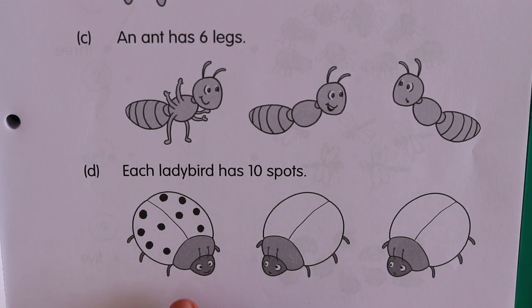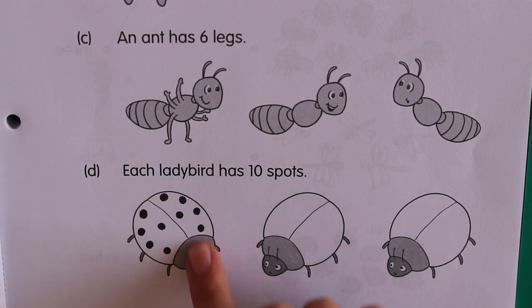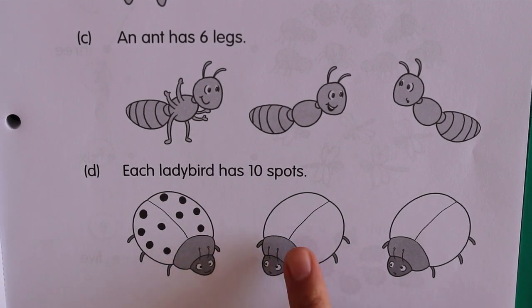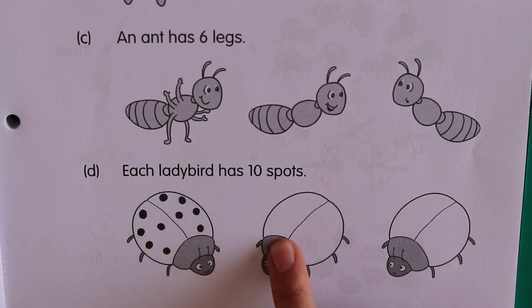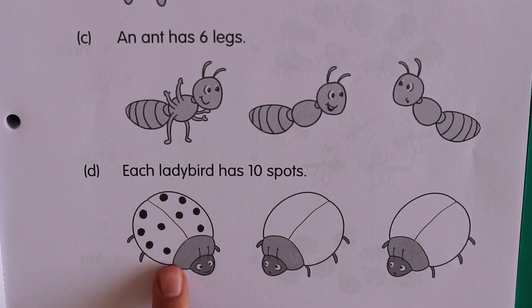Before you start with this one, I just want to show you. There's a line down the middle because the ladybug has two wings. This is the one wing and this is the other wing. Okay, the one wing has one, two, three, four, five.